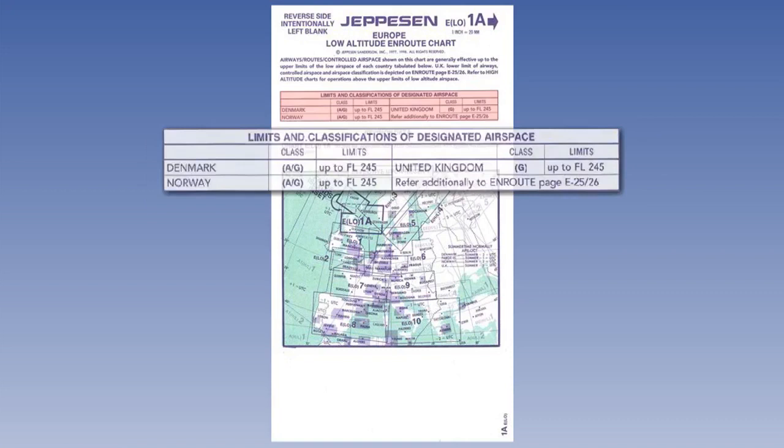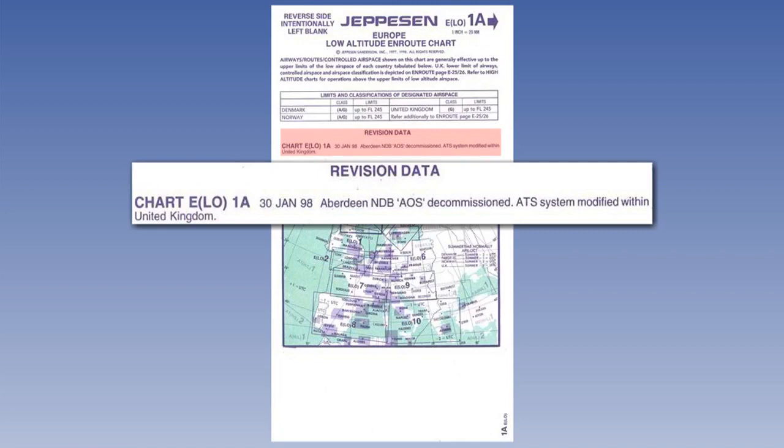Next, we come to the chart revision data. On this chart, it shows that the revision was effective on the 30th of January 1998, and that the major revision was the decommissioning of the Aberdeen NDB and the ATS was modified within the United Kingdom.